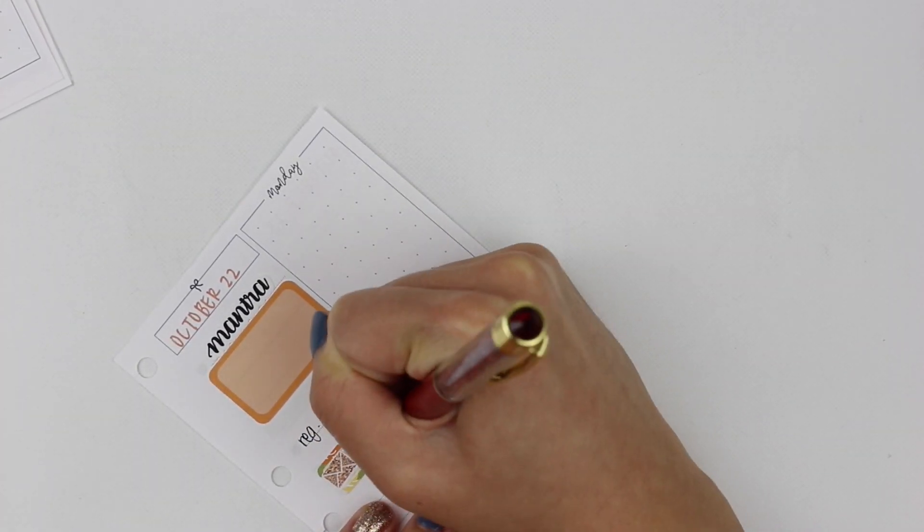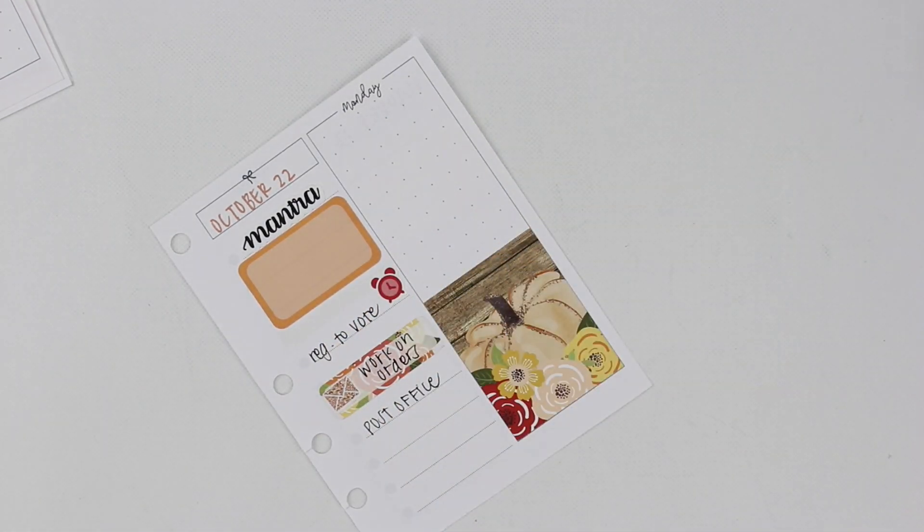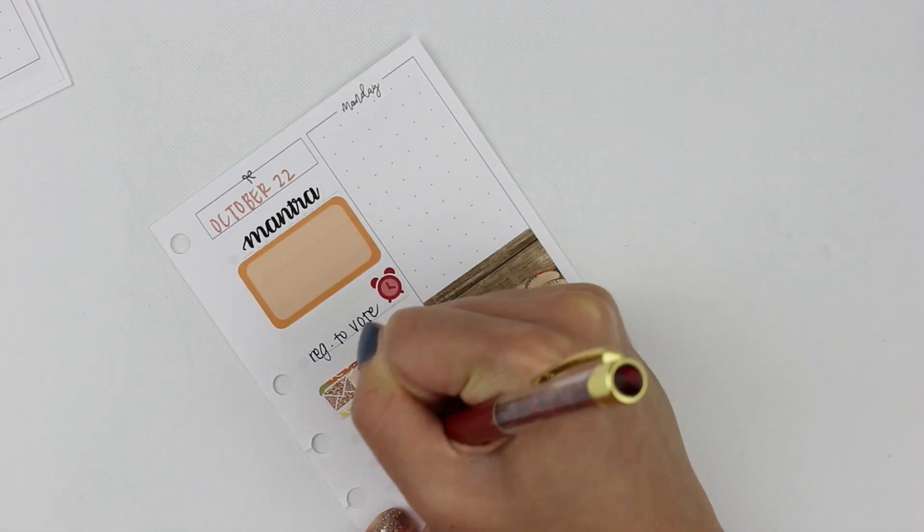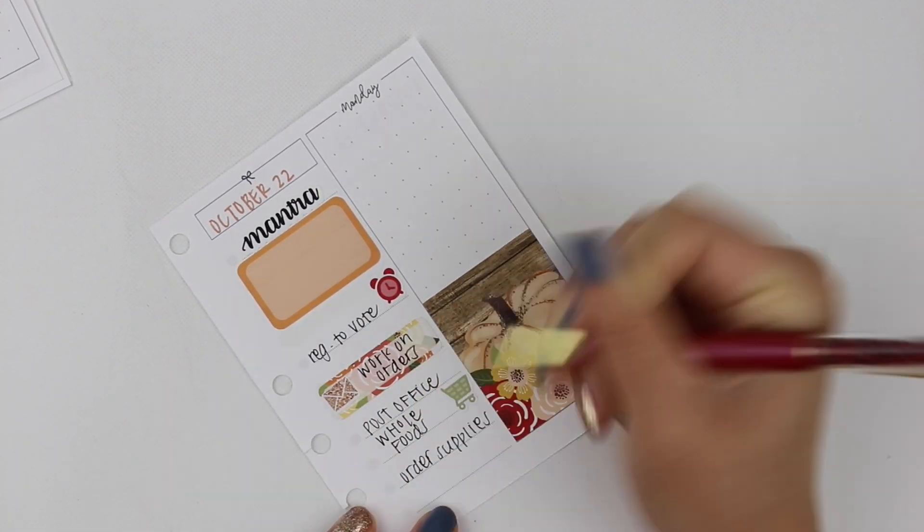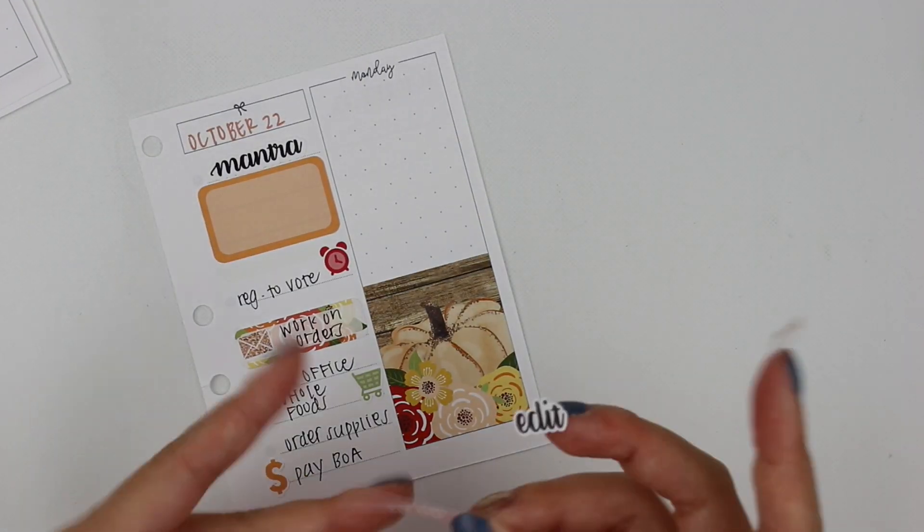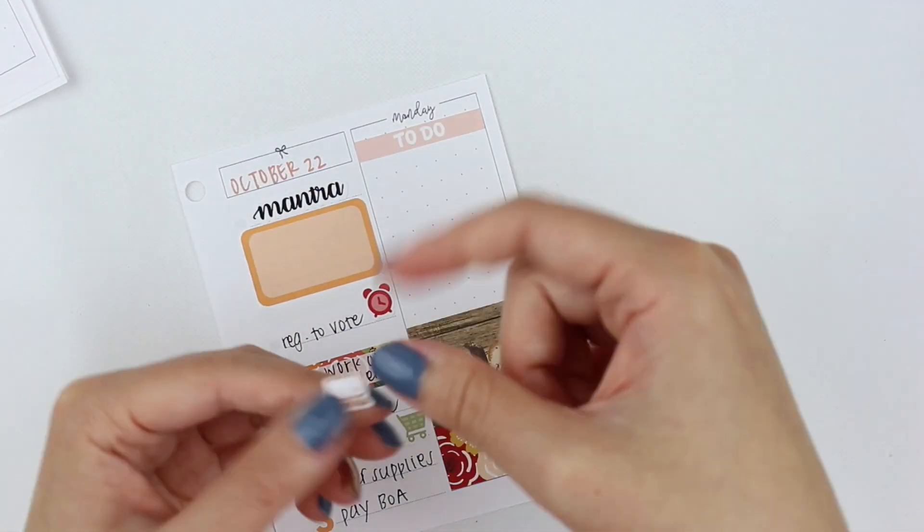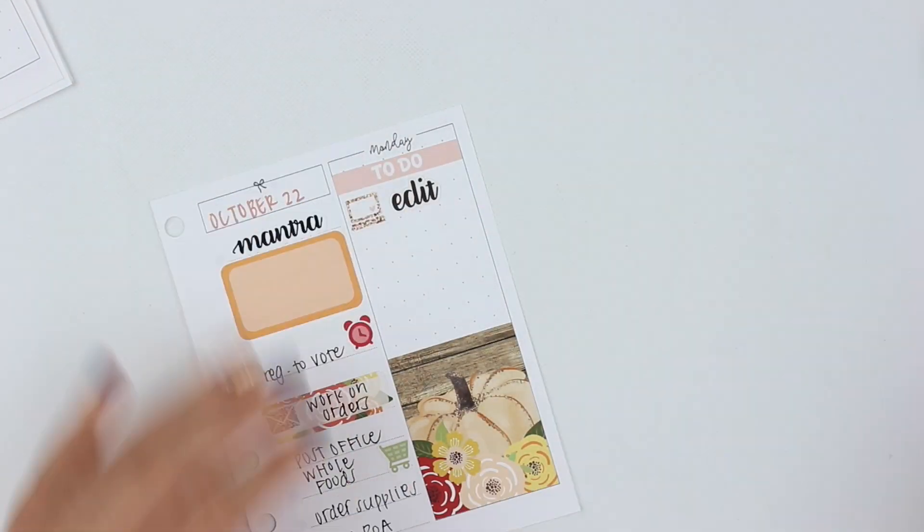Now I'm going to start planning out my days. So on Monday, I wanted to remember to register to vote. I also wanted to work on orders, drop them off at the post office, and pick up some things from Whole Foods. And then I realized that I had to order some supplies for the shop and pay my credit card bill. Those icons are all from the kit.